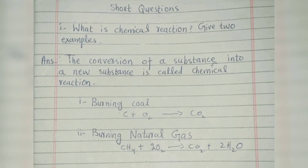Short answers of Unit 6. First question: What is a chemical reaction? Give two examples. Answer: The conversion of a substance into a new substance is called a chemical reaction. Examples: burning coal, and burning natural gas.